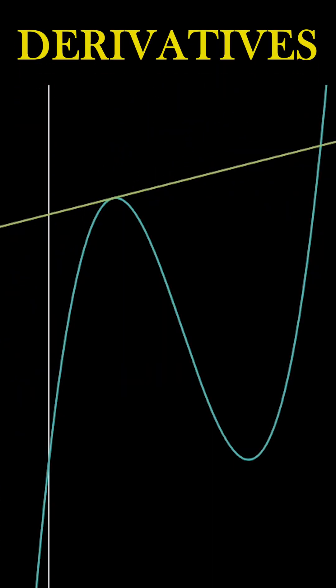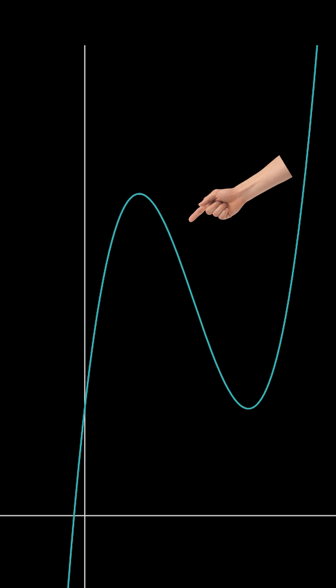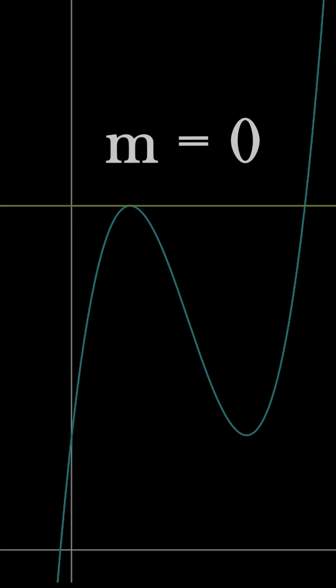You see, based on our definition of what a derivative is, each point on the function has its relative change in rate. The turning point is where the graph completely changes direction, hence no change in rate, a slope of zero.